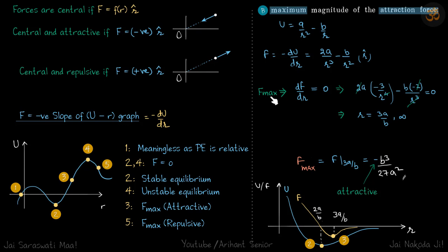Now F max, because we need to find the maximum magnitude of attractive force. F max occurs when dF by dR is zero. We do that and we see it happens at R equals 3A by B or infinity. Let's neglect infinity for now, we'll use it while plotting the graph.